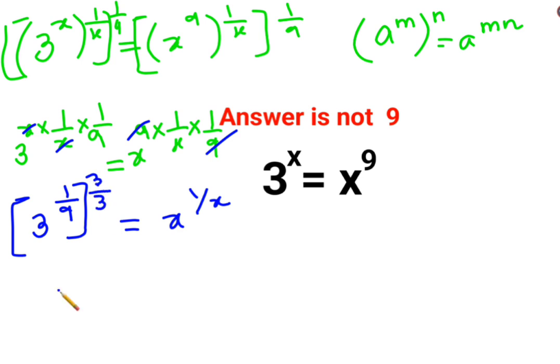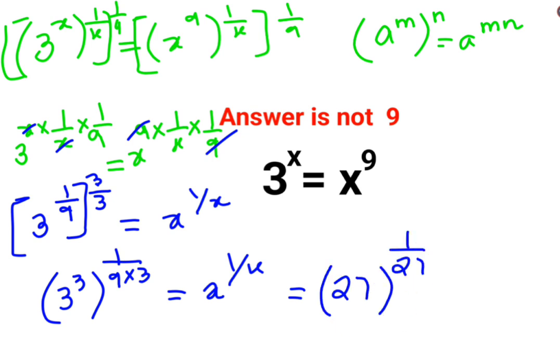Now what I do is I write the 3 inside and I will write this 1 upon 9 multiplied by 3. This is basically x raised to 1 upon x. Now 3 raised to 3 is 27 raised to 1 upon 9 multiplied by 3 that is also 1 upon 27 equals x raised to 1 upon x.